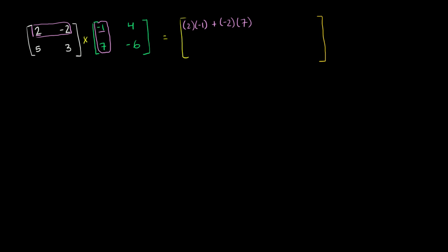But let's think about the other ones. So to get this entry right over here, we're going to take the first row from this matrix, and the second column from this matrix. And that kind of makes sense because this is, we're still in the first row, but we're in the second column of the first row right here. First row, second column. So it's going to be 2 times 4 plus negative 2 times negative 6.